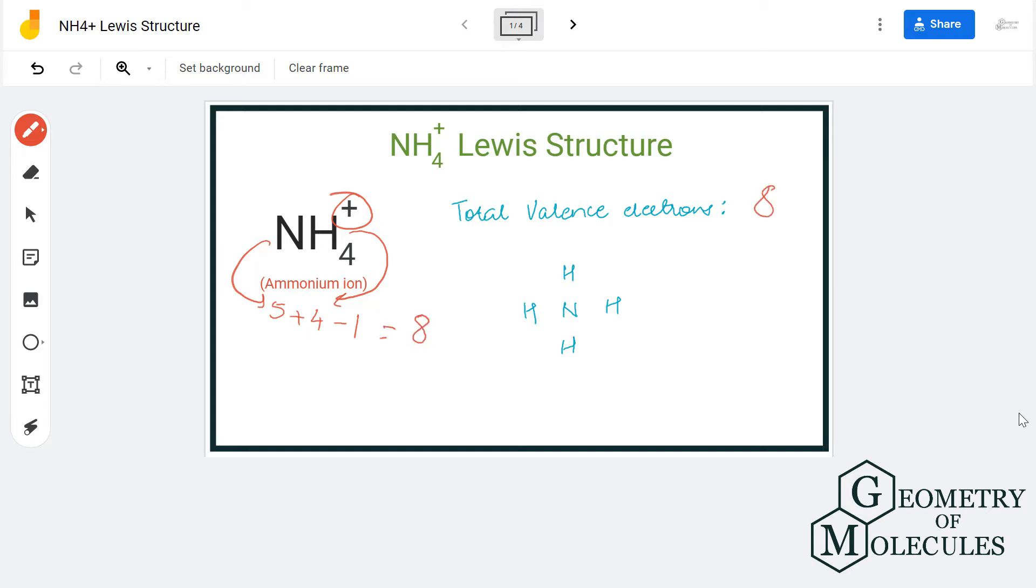The nitrogen atom will take the central position, as hydrogen atoms do not take central positions and are placed around the central atom. So the four hydrogen atoms will be placed around nitrogen atom like this.